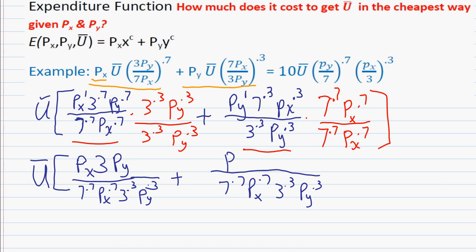So when you combine those two expressions together in the numerator, what you're going to get is 3 px times py plus 7 px times py equals 10 px py. And then that's times u bar.